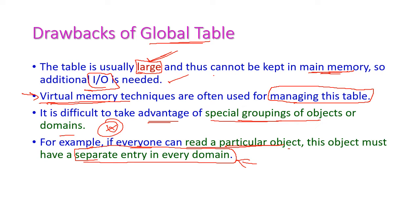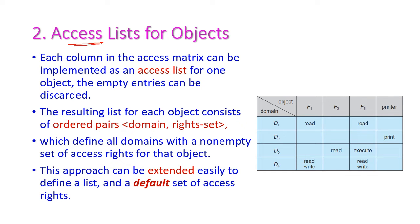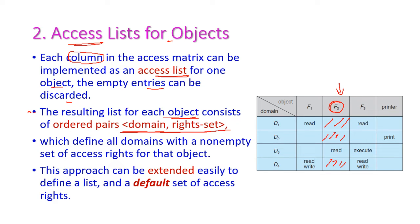The second method is access list for objects. Each column in the access matrix can be implemented as an access list for one particular object. Empty entries can be discarded. The resulting list for each object consists of ordered pairs of domain and right, which defines all domains with non-empty sets of access rights for that particular object. For example, in domain D1, file F1 has only read access. This approach can be extended easily to define a list and a default set of access rights.